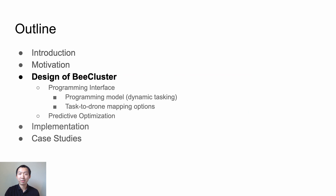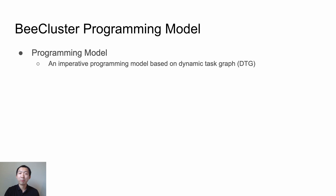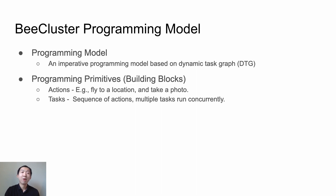So far, we have discussed the introduction and motivation of our work. Next, we will show more details about several design choices. B-Cluster adopts an imperative programming model based on dynamic task graph. The application logic is represented as a task graph, and the task graph can be dynamically updated. There are two basic primitives in our programming model. One is action, which describes basic actions such as flying to a location or taking a photo. The other is task, which consists of a sequence of actions. There can be multiple tasks running concurrently in an application.